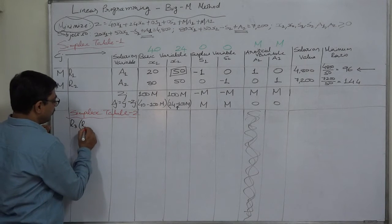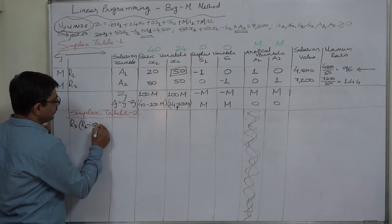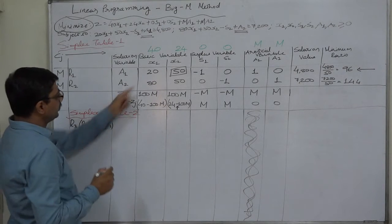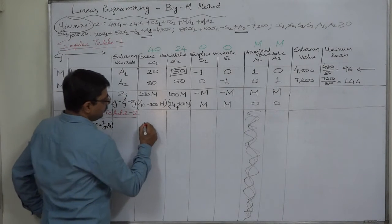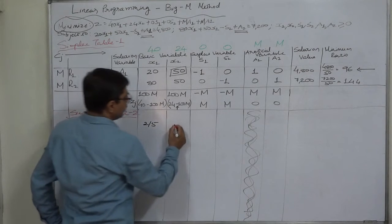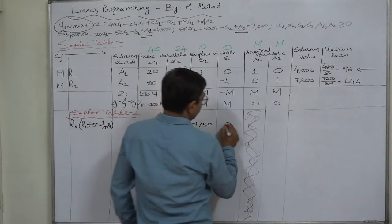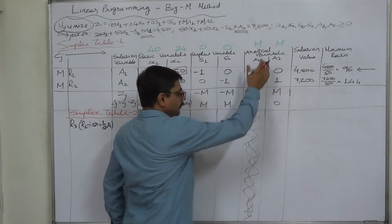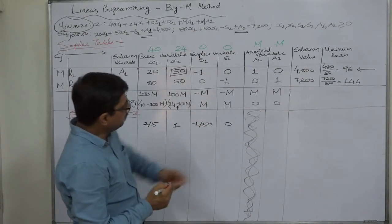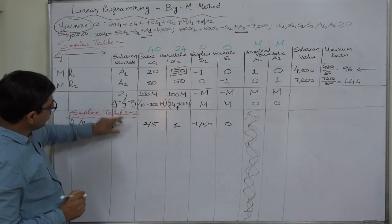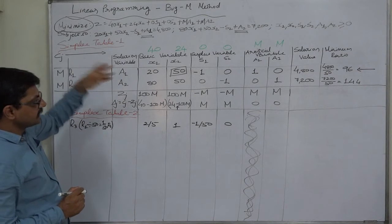R1 divided by 50, that is 1/50th of r1. So 20 divided by 50 will be 2/5, 50 divided by 50 is 1, minus 1 divided by 50 is minus 1/50, minus 1/50, 0 divided by 50 is 0. We are going to drop the column of A1 because now A1 will not be here as a solution variable, as it is the variable of the outgoing row.